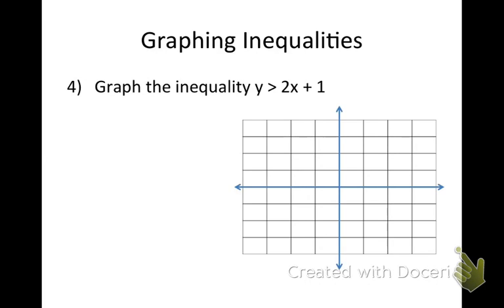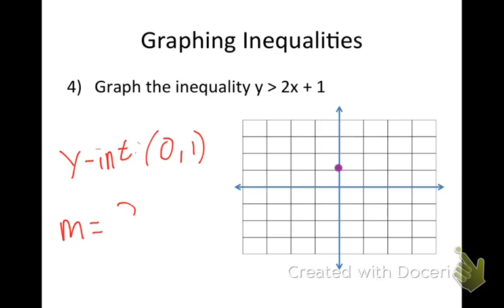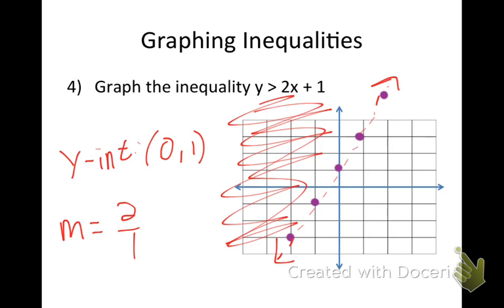Try this one on your own — identify the y-intercept and slope then graph it. My slope is 2 over 1, so I go up 2 over 1, or down 2 left 1. Solid or dashed line? Shade above or below? The answer should look like that.